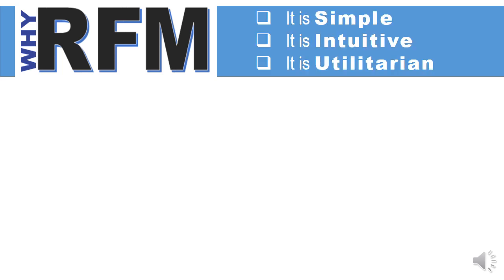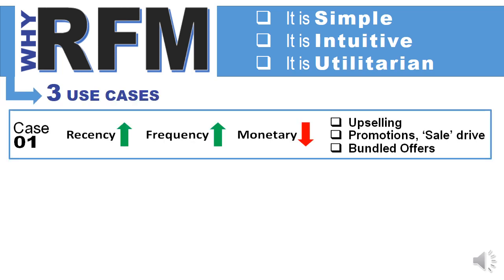Continuing on why RFM — things cannot be more simple or more intuitive than asking: when did you last come, how often do you come, and how much do you buy? A truly utilitarian model. Let us look at a couple of case studies. Case one: recency is very good, frequency is very good, but monetary is not good — the customer is not buying enough. What do you do? You think of upselling, you think of promotions, you go on a massive sales blitz, and you try to give him bundled offers to entice him to buy more.